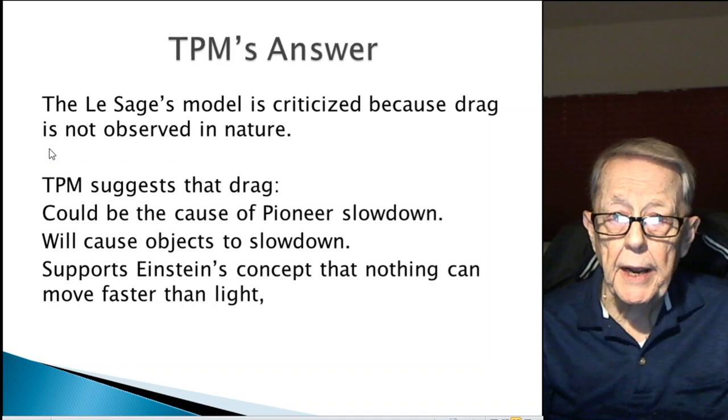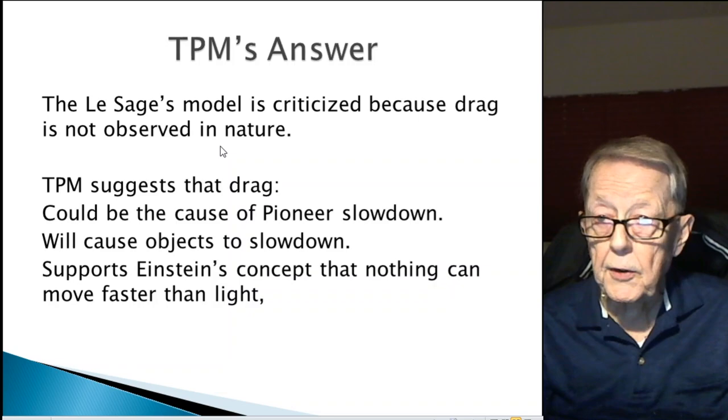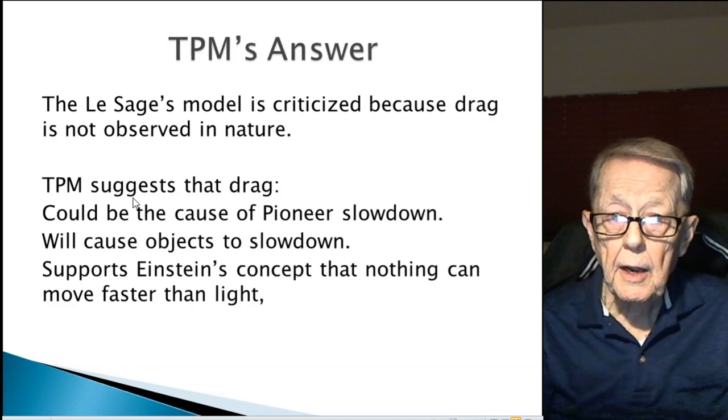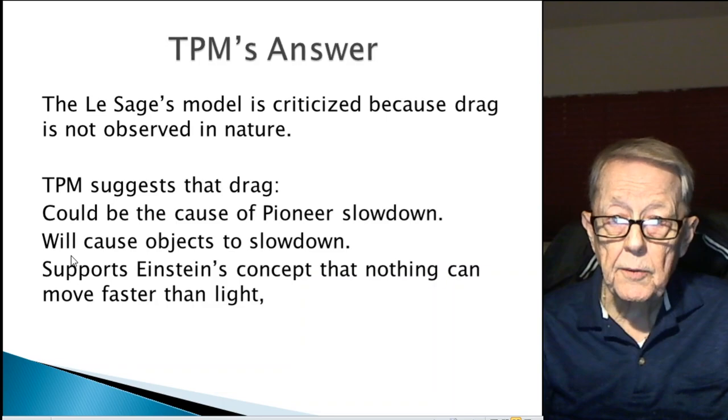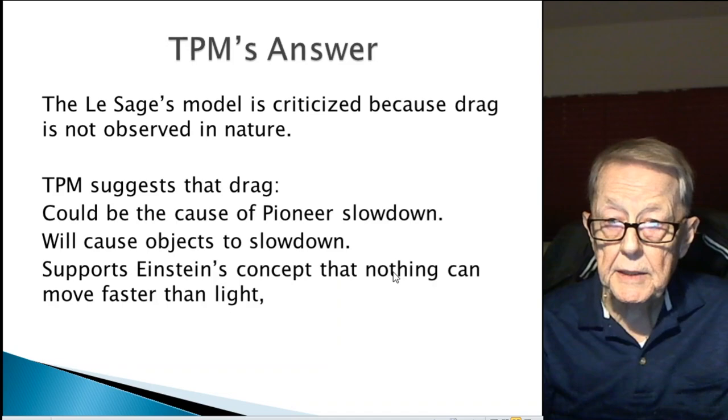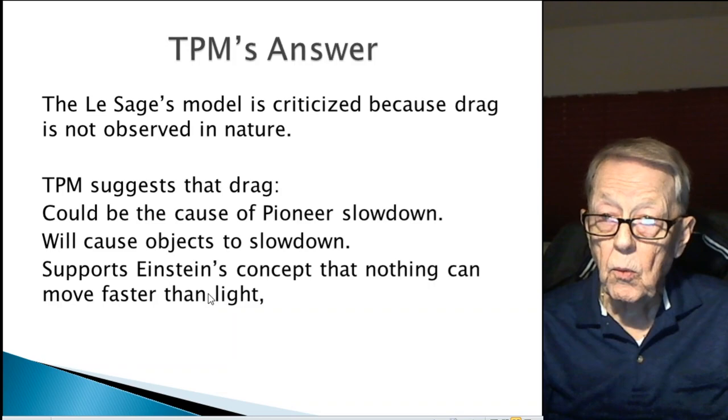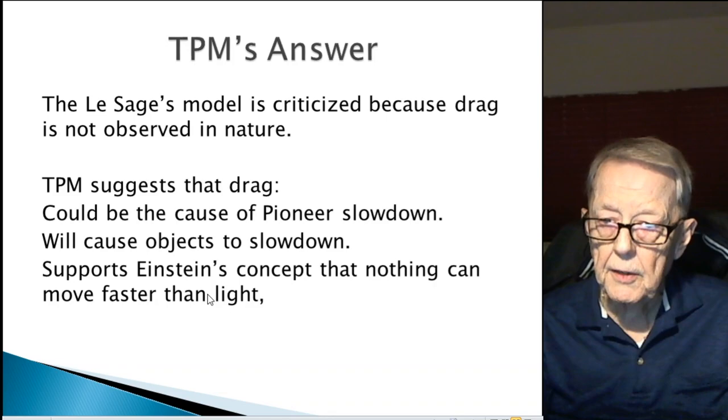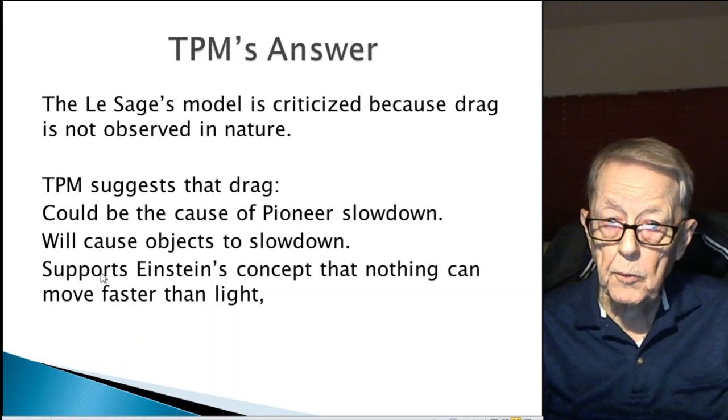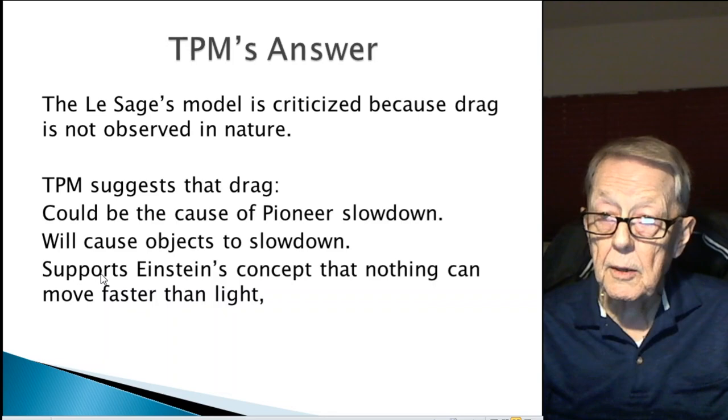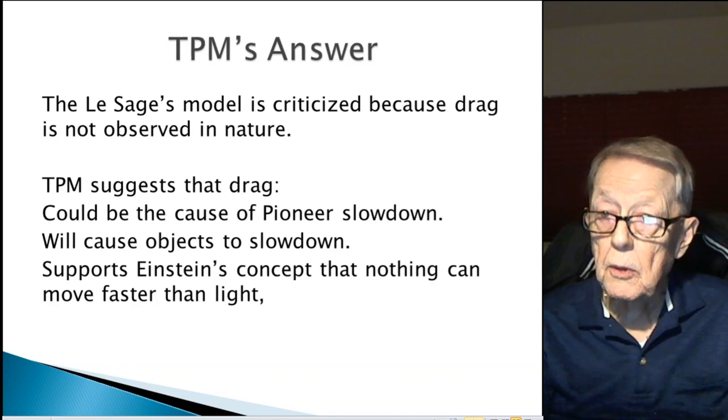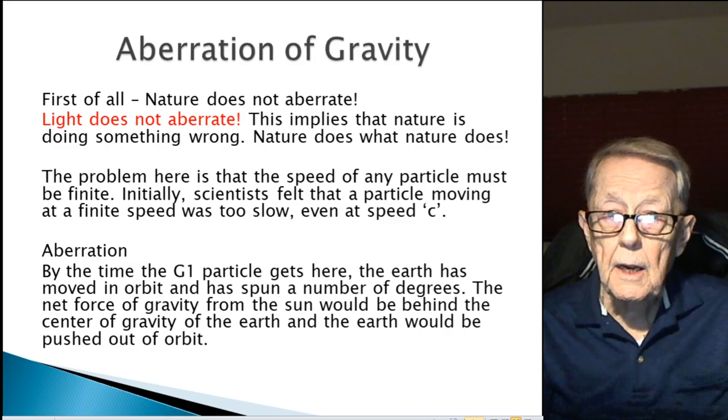Well, it turns out that TPM's answer is the Lesage model is criticized because drag is not observed in nature. Well, one could argue that the Pioneer spacecrafts are an example of drag. TPM suggests that drag could be the cause of the Pioneer slowdown, will cause all objects to slow down, and supports Einstein's concept that nothing can move faster than light. You know, people always ask the question, what keeps it from moving faster? It's the G1 particle field, keeps it from even getting close. We're talking about larger objects, not particles. G2 particle moves extremely fast, but it's not your normal object that you see going through space.